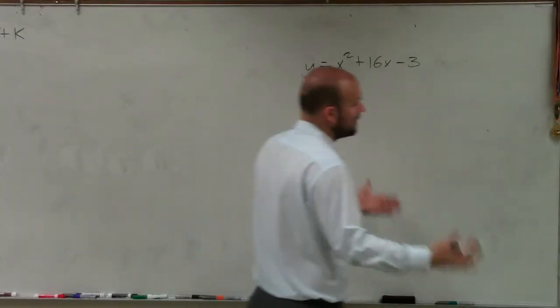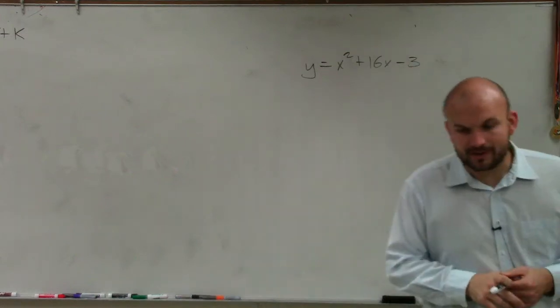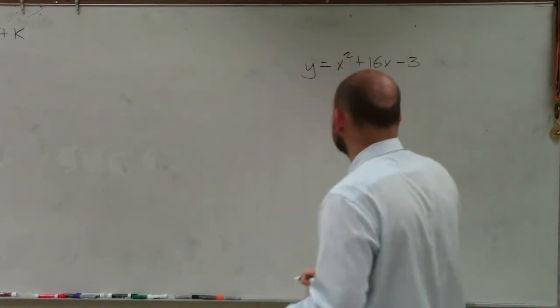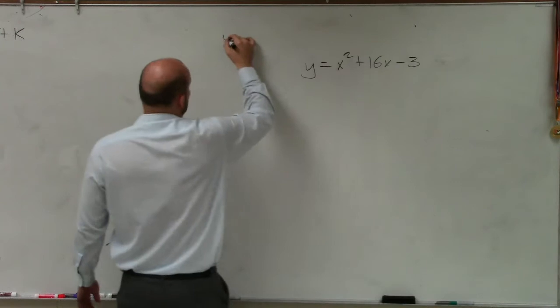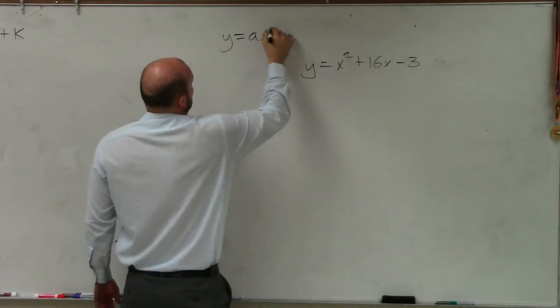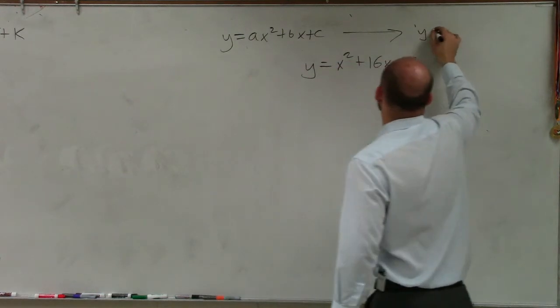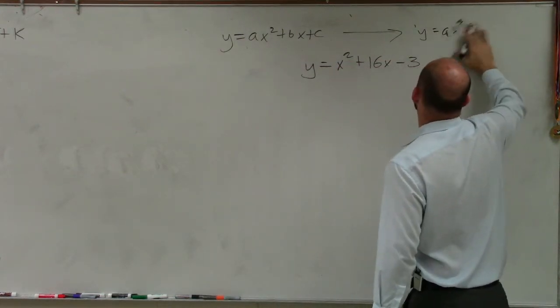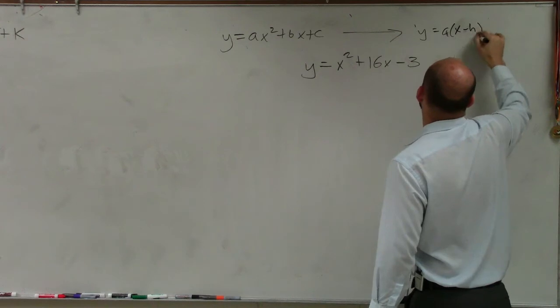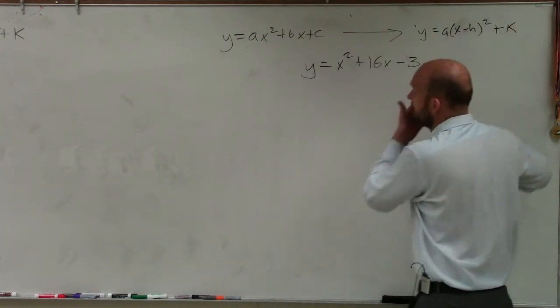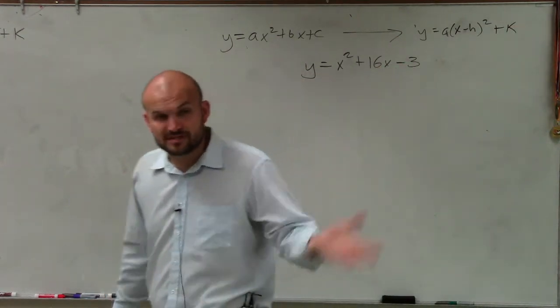All right. So, completing the square. What we're going to be doing for completing the square is, if you guys remember, we're trying to go from standard form to vertex form. Why do I keep on doing this? We're trying to go from standard form to vertex form.